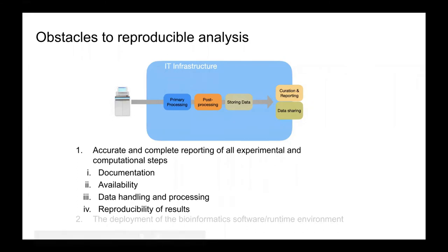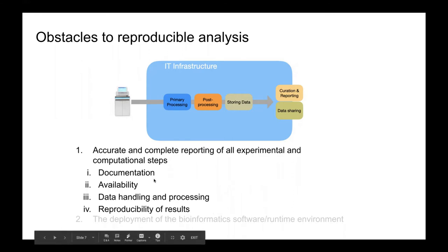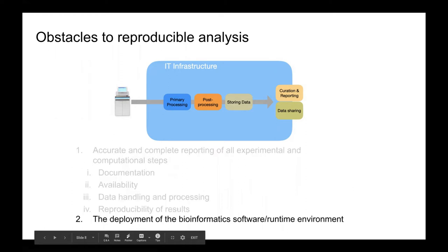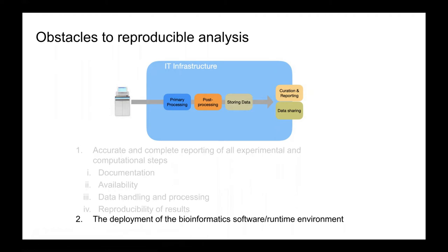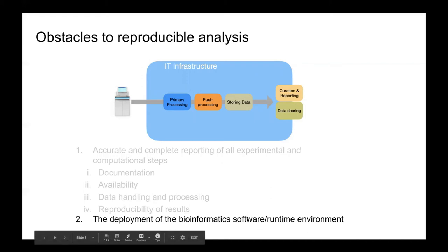Using these carefully selected tools and methods, we have implemented a rapid whole genome and transcriptome pipeline for patients' data, focusing on the interplay between bioinformatics and IT infrastructure to tackle two obstacles to reproducible analysis. The first is accurate and complete reporting of all experimental and computational steps for reproducibility of results. The second is the ability to accurately reproduce software or runtime environment settings for the reproducibility of the software environment.